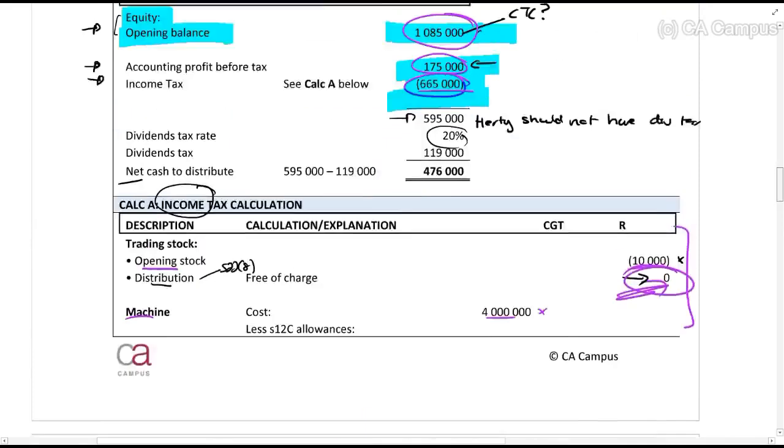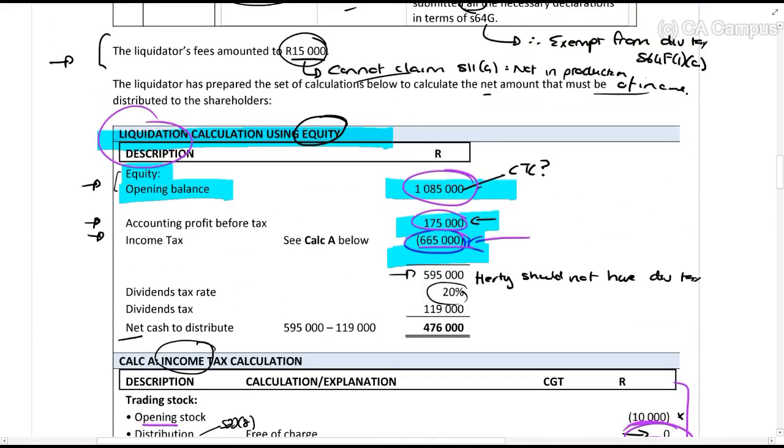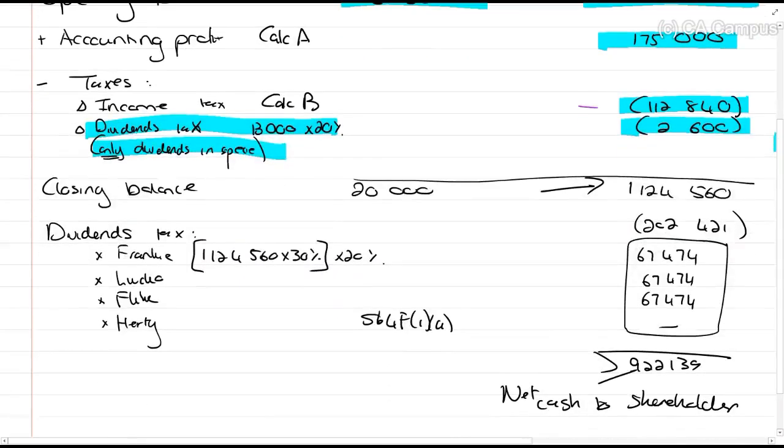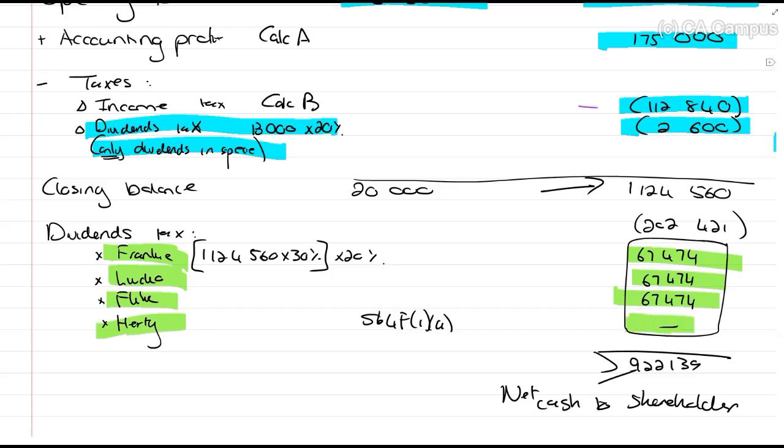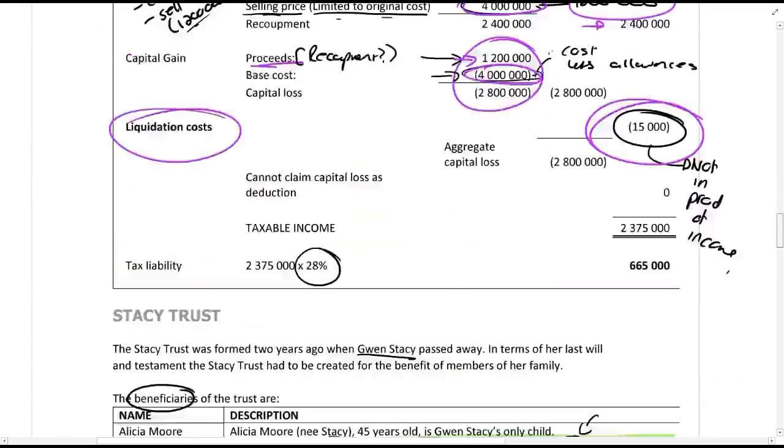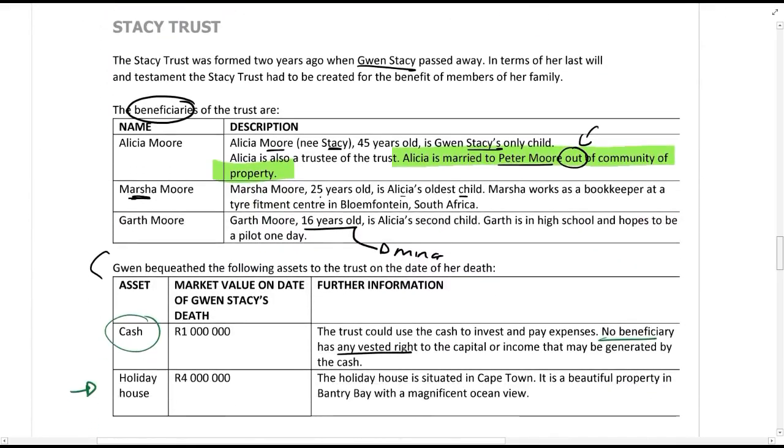Then, if we just go back to our liquidation calculations so that's the amount. They then calculated 20% dividends tax on the full amount. What is the issue that we saw here? If we look at the full calculation of a dividends tax, Frankie, Laco and Fluke, they all have dividends tax which is correct but Hurti shouldn't have. So, it's incorrect of them to multiply that full amount by 20%. And that, guys, that is your solution talking about that.